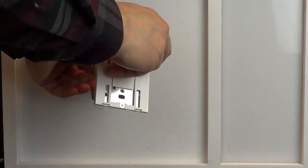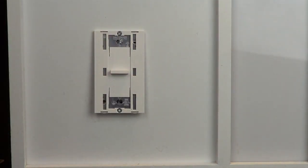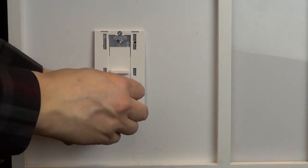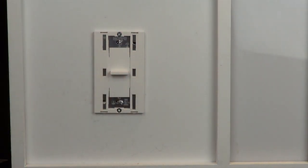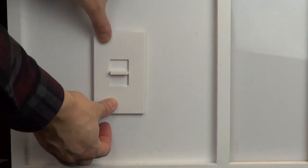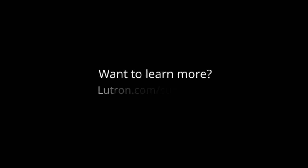Screw the control back into the wall and add the wall plate. Turn the power back on at the breaker.